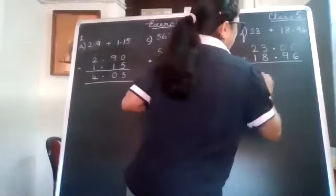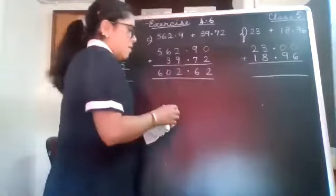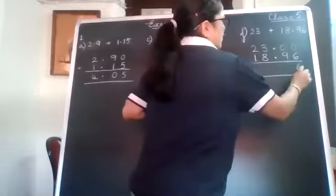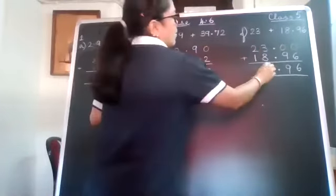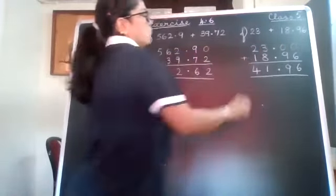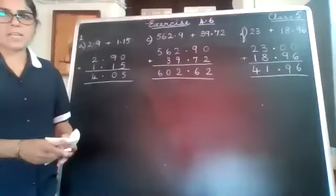Now I add like I normally add. 0 plus 6 is 6. 0 plus 9 is 9. The point 3 plus 8 is 11. Carry 1 and 4. 41.96.